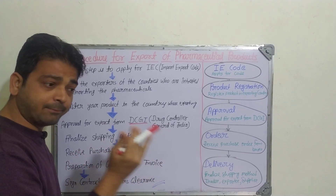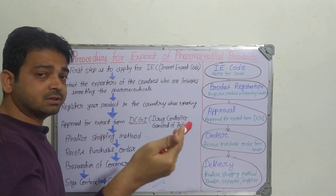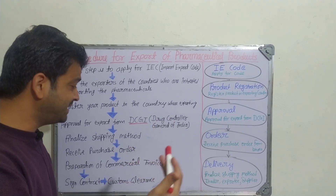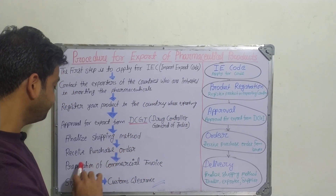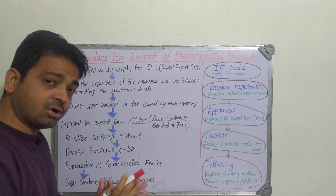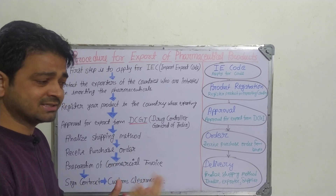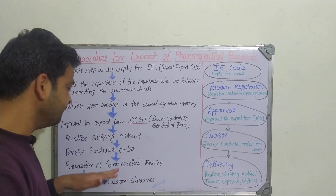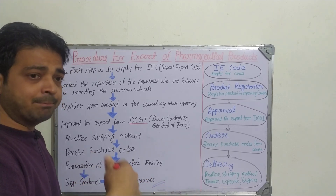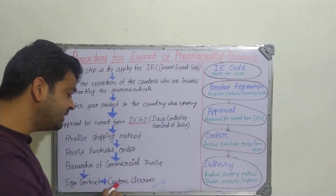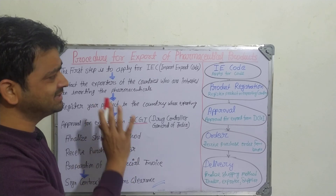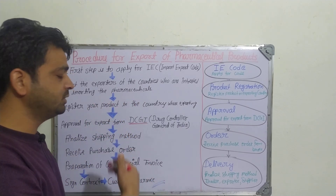Next, receive the purchase order from the organization in the destination country — for example, Australia — who is going to purchase your product. Once the purchase order is released, prepare a commercial invoice covering costs, taxes, and excise duties. Then both parties — the buyer and the seller — sign the contract, followed by custom clearance. These steps generally apply to all export products, but are specifically important for pharmaceuticals.